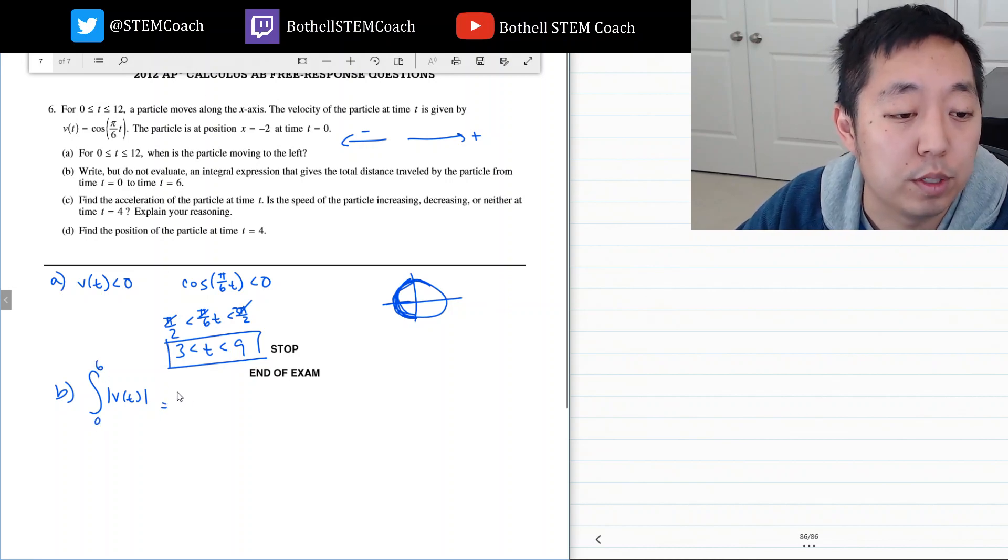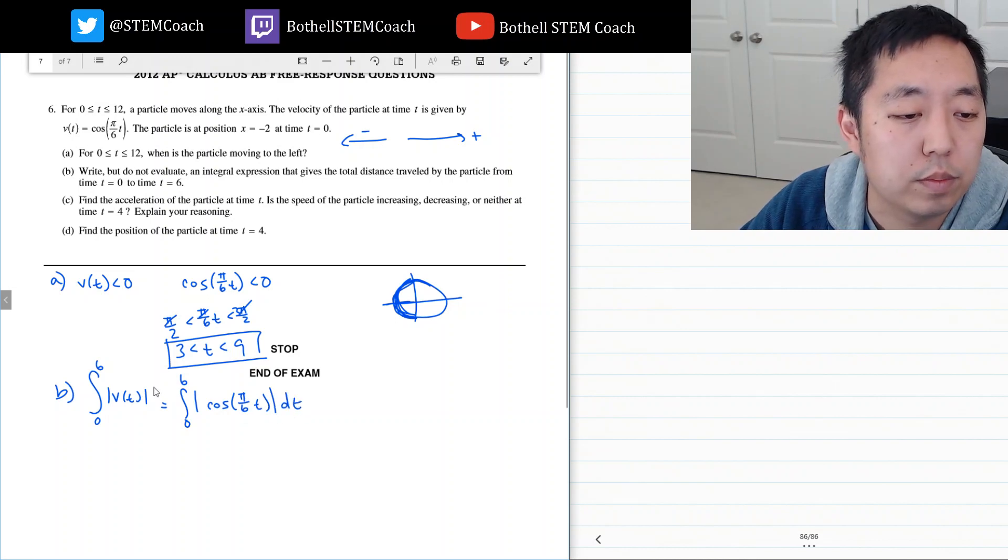So I go 0 to 6 absolute value of cosine pi over 6t dt.